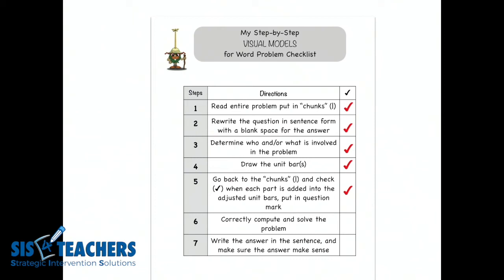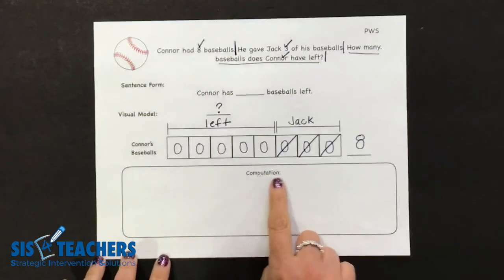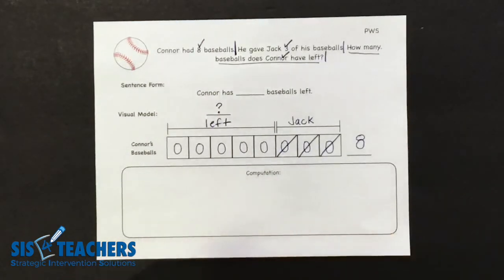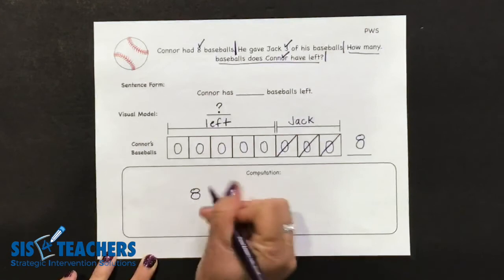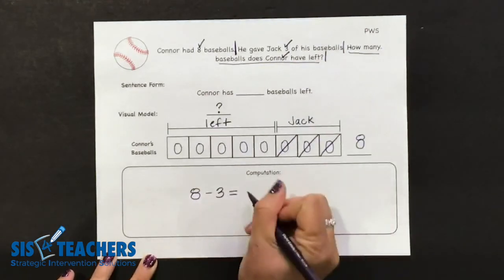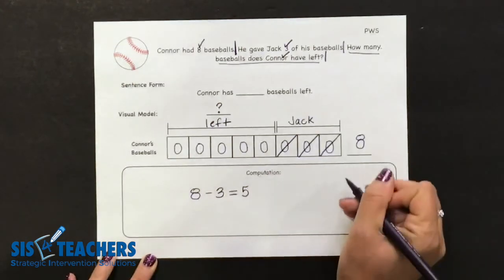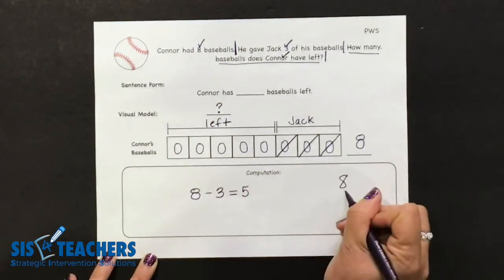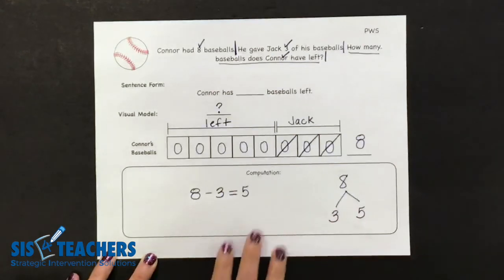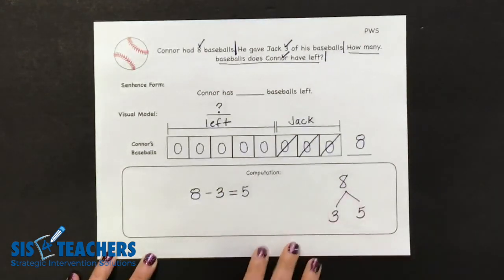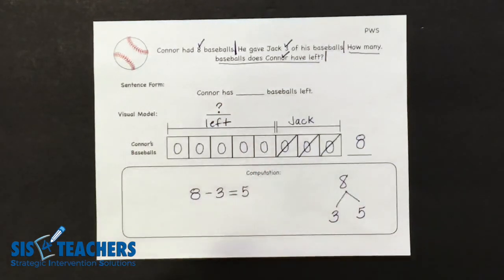Now it's time to solve — time to do the computation to correctly compute and solve the problem. On the scaffolded mats, kids can just look up and tell us the answer. But when we head back to the journal, we want to look at what computation is happening. Maybe the child wants to do a number bond to show what's happening. They might do a number sentence: Connor started off with eight baseballs, gave three away to his friend Jack, and is left with five. Students might also do a number bond showing the total, the part given to his friend, and the part he has left. Kids could also draw a picture to show that pictorially.